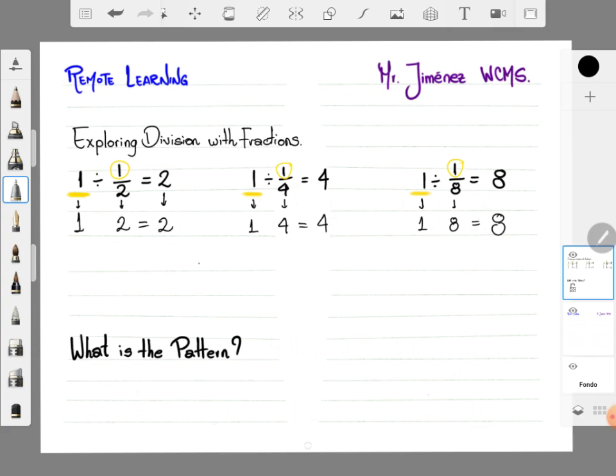So which operation can you use to make these statements true? What operation between 1 and 2 is always 2? Which operation between 1 and 4 equals 4? Which operation between 1 and 8 equals 8?